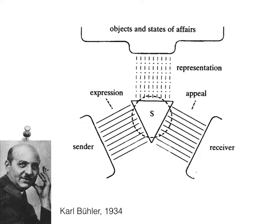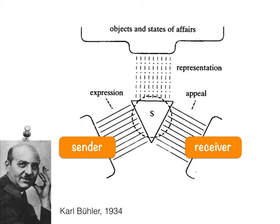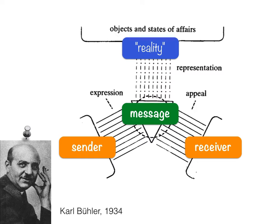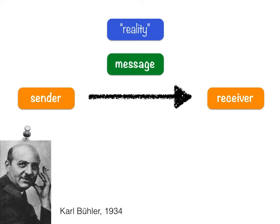This looks complicated, but if we look at it, we can see some of the elements just mentioned — there's a sender and a receiver. The S stands for signal, but we can call it message. We're still missing something: objects and states of affairs — let's just call it reality in quotes, because it doesn't stand for the entire reality, just some aspect of it. So this video is the message, we are the senders, whoever's watching are the receivers, and this video message stands for some aspect of reality — the theory of functions of language. So we have four elements so far.